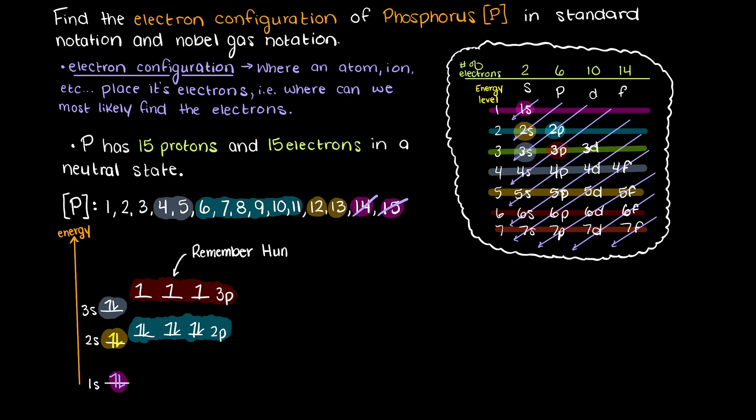However, just remember Hund's rule, which states that each electron will occupy its own orbital before spin pairing with another electron. There we go, we have just solved for the standard electron configuration notation for phosphorus.